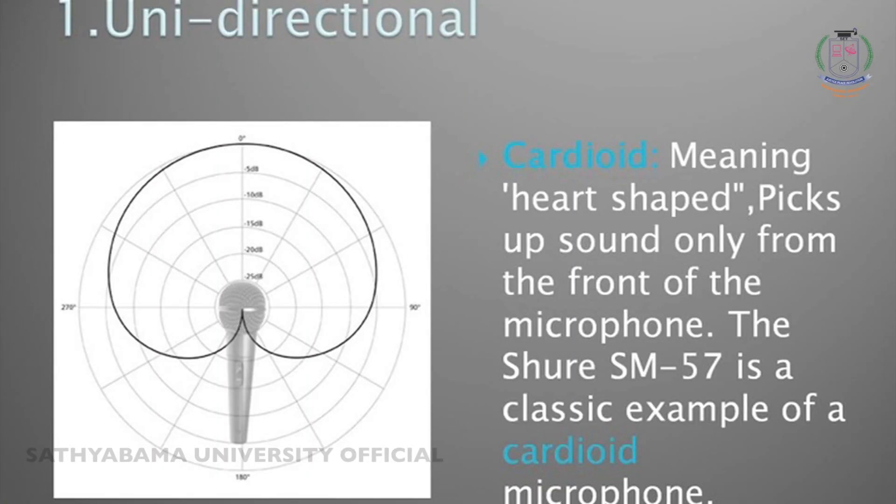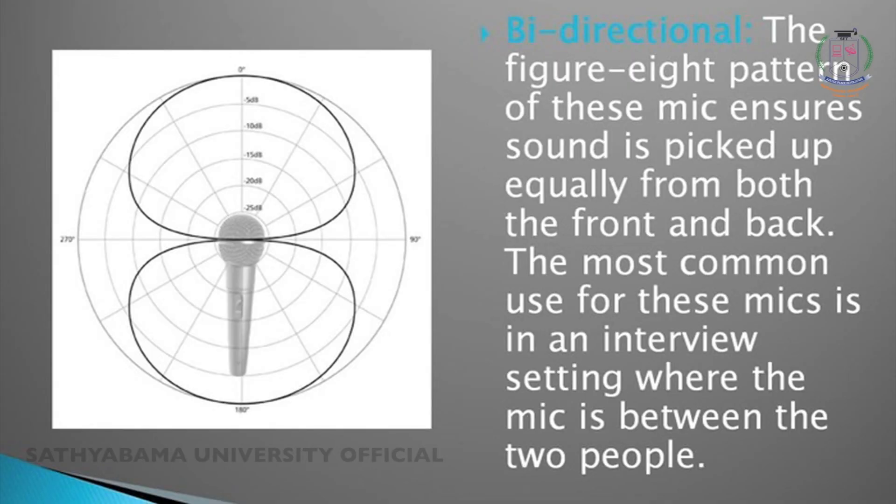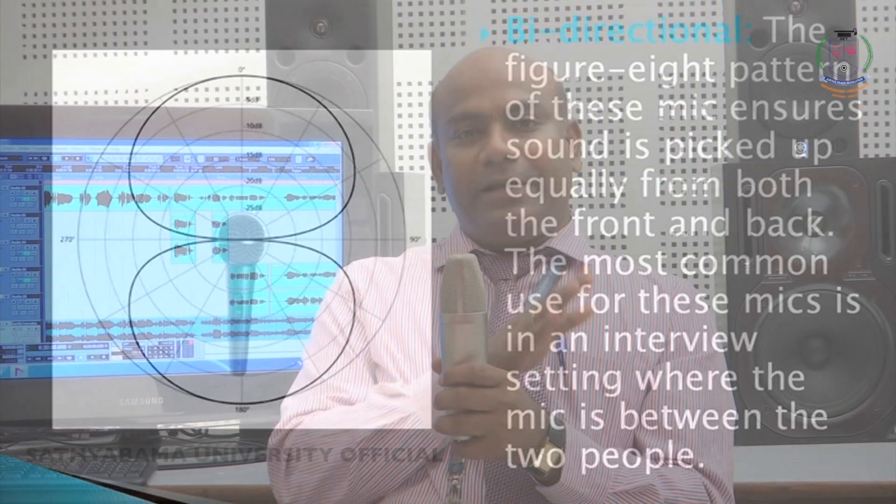Let us look at the first one — unidirectional microphone. Uni means single. So a unidirectional microphone will pick up from the front side only. For example, if I am talking in front of the microphone, the microphone will pick up the front side only — that is called a unidirectional microphone. The second one is bidirectional microphone. Bi means two, so that microphone will pick up front and rear, or left and right.